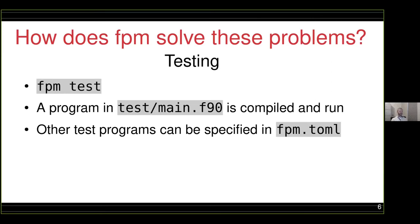For unit testing, FPM supports a simple interface: if you have a program in the test folder called `main.f90`, it will compile and run that program for you. That's where you put your unit tests, and `fpm test` will run them. Additionally, you can specify additional test programs in the `fpm.toml` config file. There's additional information on how to do that in the packaging guide.